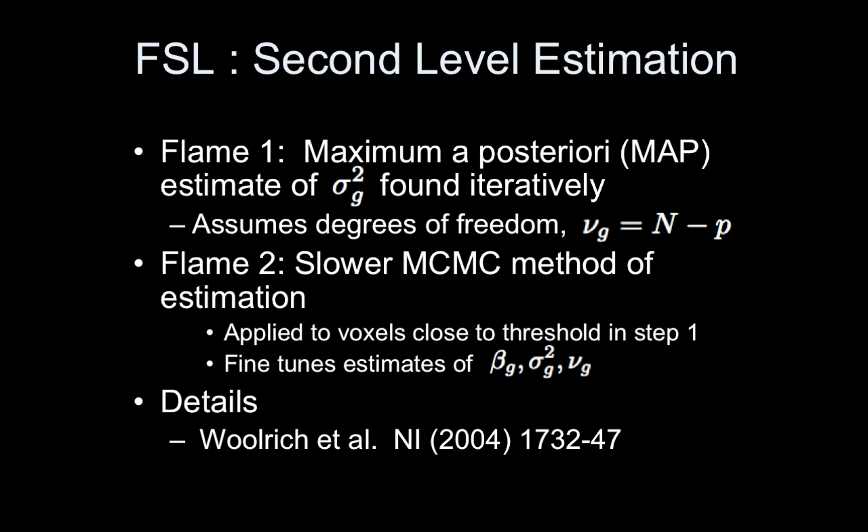Those are FLAME 1 and FLAME 2. FLAME 1 uses a MAP estimate of sigma squared g which is found iteratively, and it speeds up the process by assuming the degrees of freedom are known—it's just the number of subjects minus the number of parameters in your model. FLAME 2 is, I believe, not recommended. Just stick with FLAME 1.